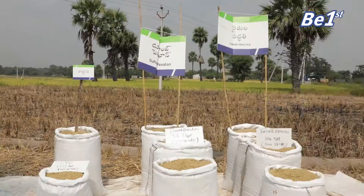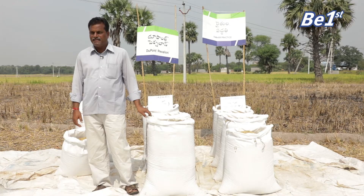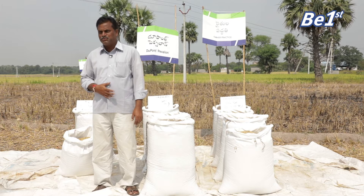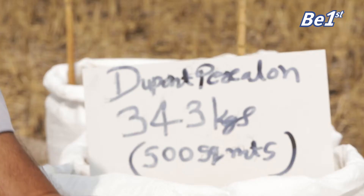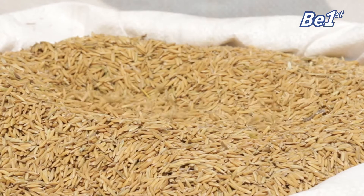This is a very small area. The area is about two acres. You can see the location, and in this area there are about 30 kgs yield. But with DuPont and Fexalan, there are about 30 kgs in the same way.